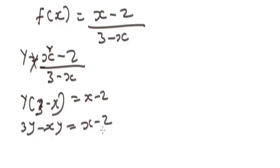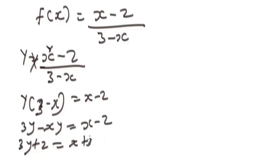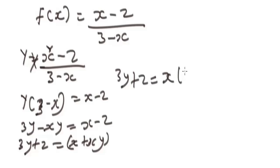Moving terms across, we get 3y − 2 equals x − xy. Then factoring the right side, we have 3y + 2 = x(1 + y). When you multiply (1 + y) by x you get back to this expression.